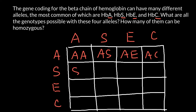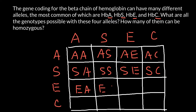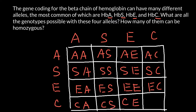The second row gives us: SA, SS, SE, and SC. First of all, how many of them are going to be homozygous? We can find all the homozygous alleles along the diagonal here, so we would have four possible homozygous variants.